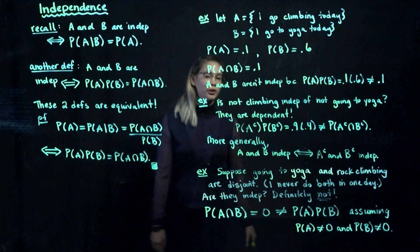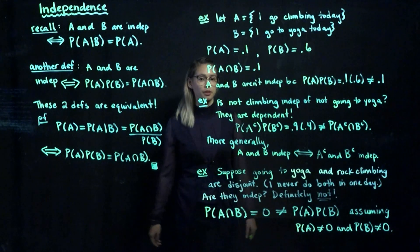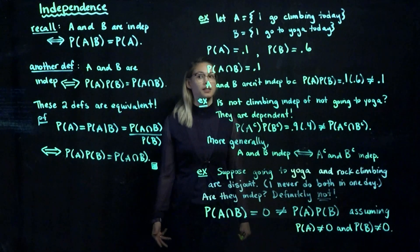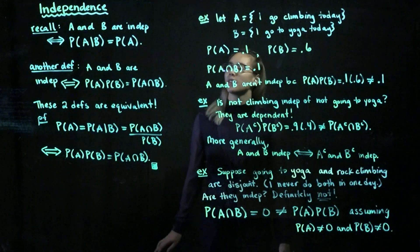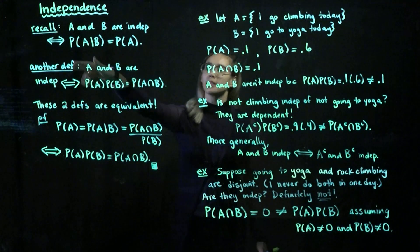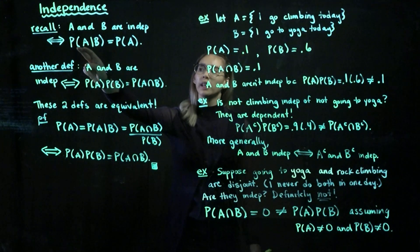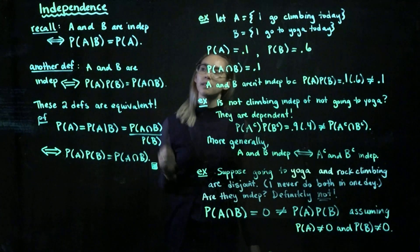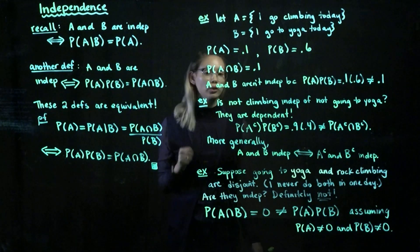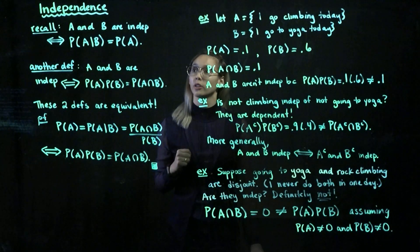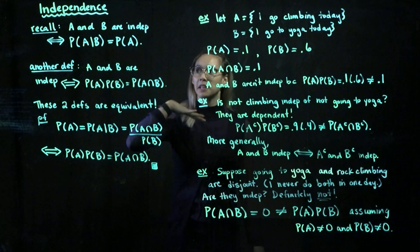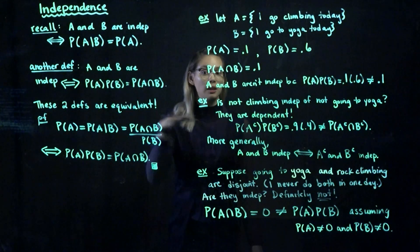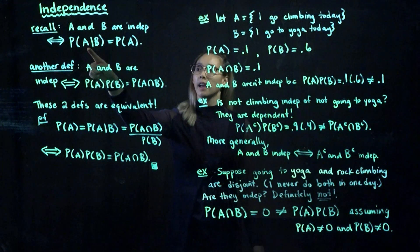In this video, we return to the concept of independence — so independent events. A couple of videos ago, I said that events A and B are independent if and only if the probability of A given B is equal to the probability of A. In other words, intuitively, if we know B happened, then that tells us absolutely nothing about the probability of A happening.